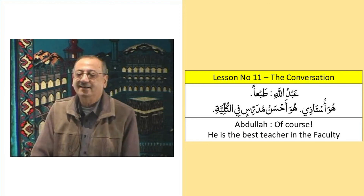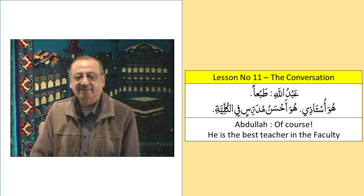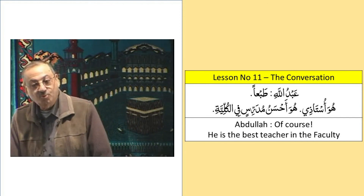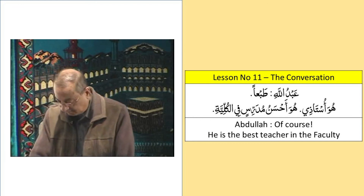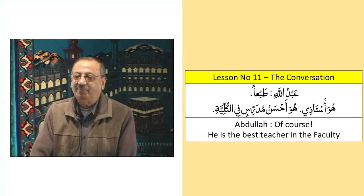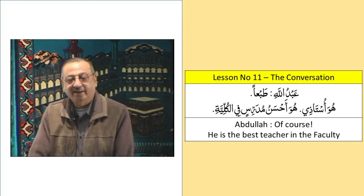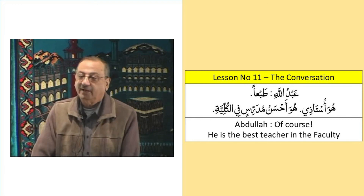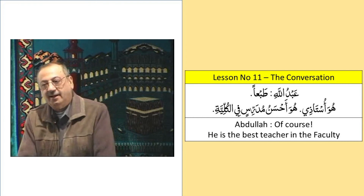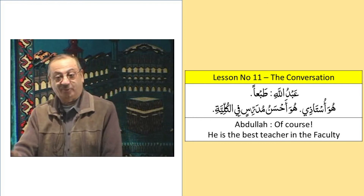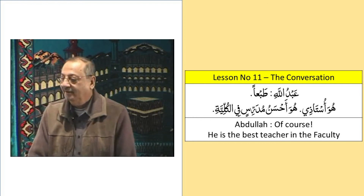'Huwa ustazi' — Ustazi has two words: Mudaf and Mudafilihi. Huwa is Mubtada; Ustazu is Khabar and Mudaf; Ya mutakalim is Mudafilihi. Then: 'Huwa ahsanu mudarrisin fi al-kulliyati' — 'He is the best teacher in the faculty.' Huwa is again Mubtada; Ahsanu is Khabar and Mudaf; Mudarrisin is Mudafilihi. Filkhulliyati is Jaar Majroor. This is the superlative degree.